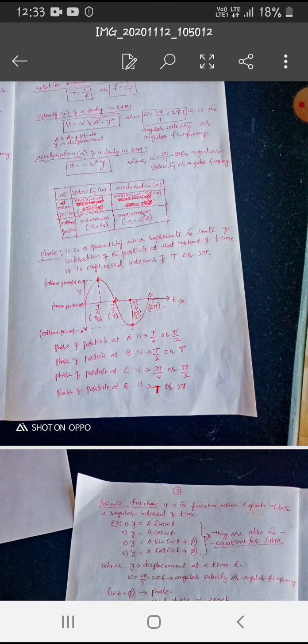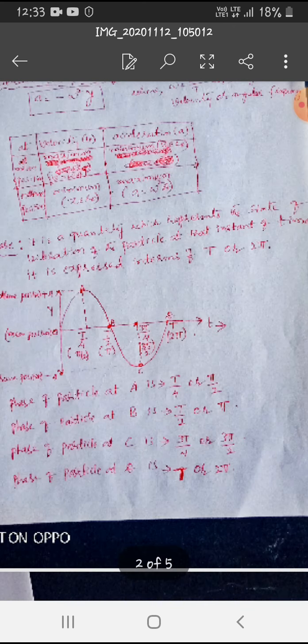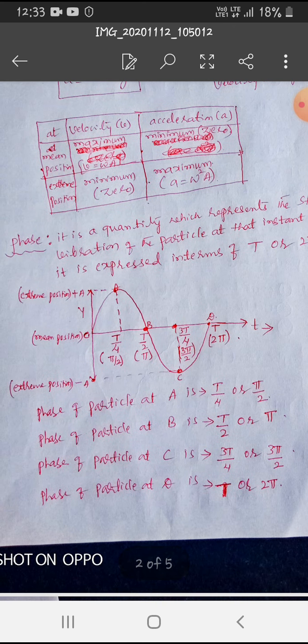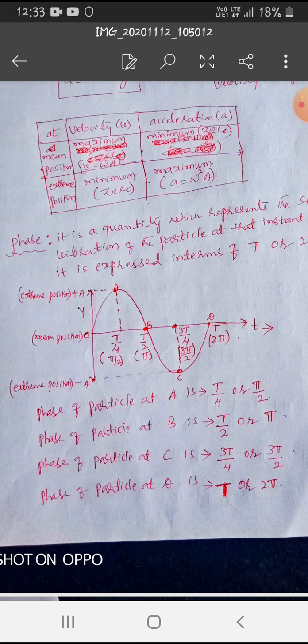In the graph, if you write from mean position to up, from mean position to if it go to extreme position, then it is the formula for that is T by 4 or pi by 2 it becomes. And from that, if it come back to mean position, then it is T by 2 or pi.